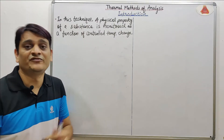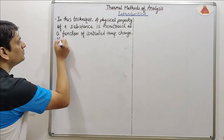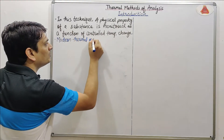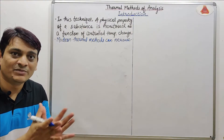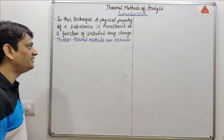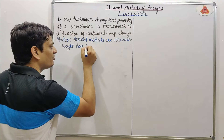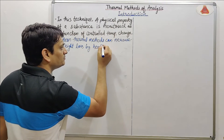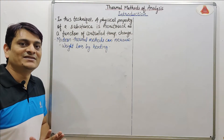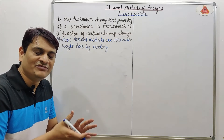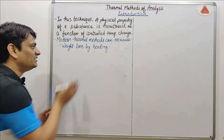Now the question arises: what are those physical properties which can be measured by these thermal techniques? The first property which can be measured by thermal methods is weight loss by heating. So when we take any sample and provide heat, there may be loss of weight, and how much weight is lost will be measured by using this technique.